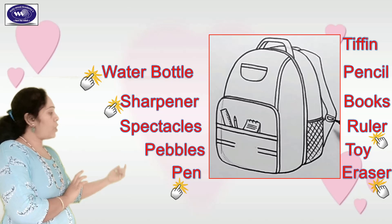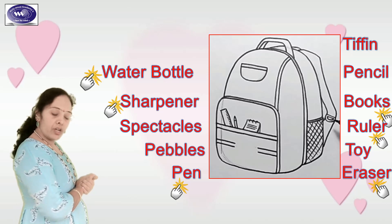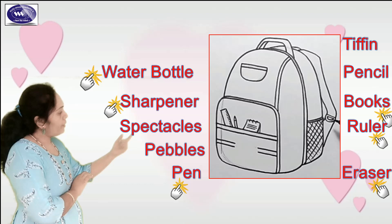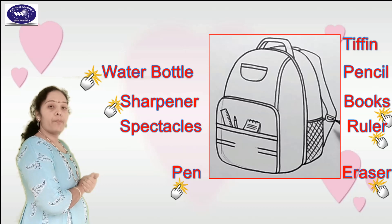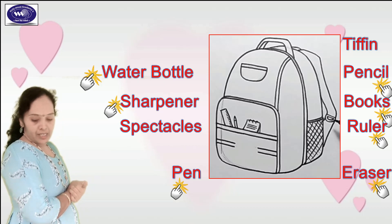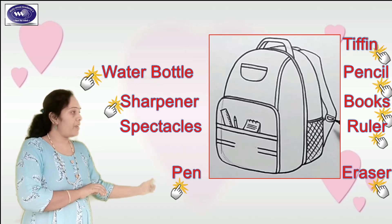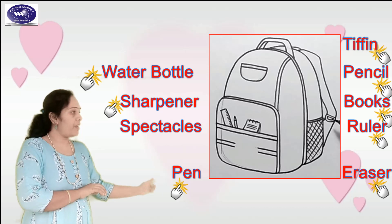Books — yes, so mention books also. Then toy — shall we carry a toy to school? No, so erase it, omit it. Then pebbles — shall we carry pebbles? No, so no need to write. Then pencil — yes, so write pencil. Tiffin bag — tiffin, yes, so write tiffin. Then spectacle — no. Then rabbit — no.